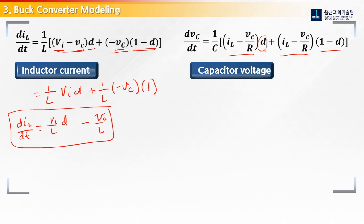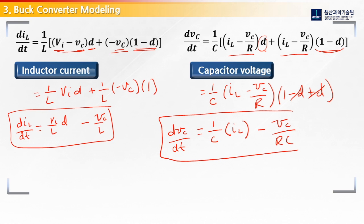So we can simply just take these terms and add them together. 1 over C, we'll get IL minus Vc over R, here. And then we would get 1 minus D, plus D. These cancel out. And so we're left with a nice, simple equation: dVc/dt = 1/C times (IL - Vc/RC).